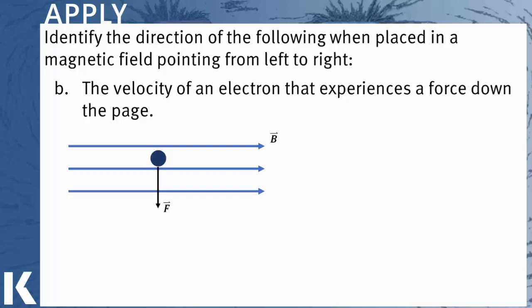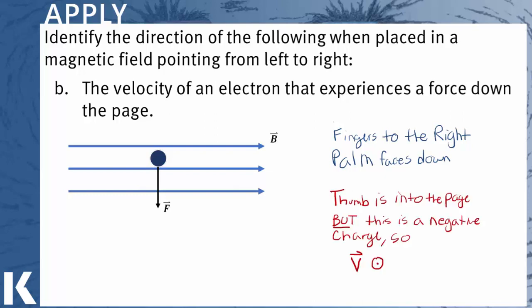But just like before, we're going to take our right hand, and we're going to point our fingers to the right, and make our palm face down. And when we do that, that forces our thumb to point into the page. But this is a negative charge, so we have to flip our final answer and say that the velocity is coming out of the page towards us.